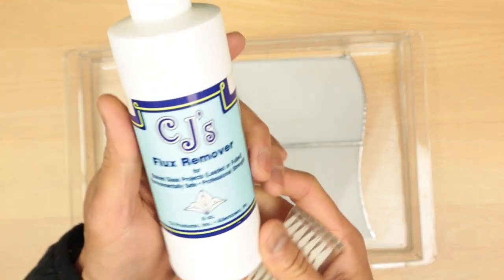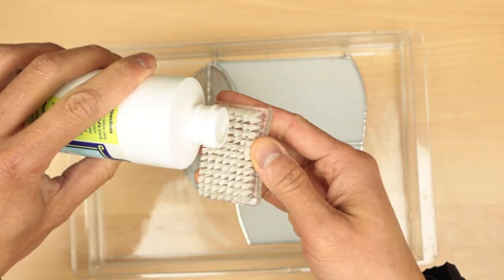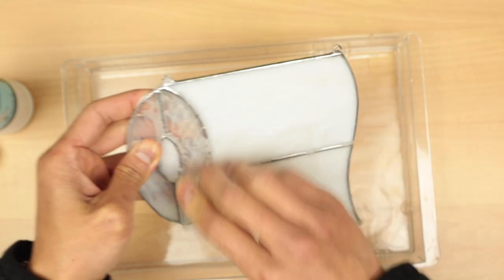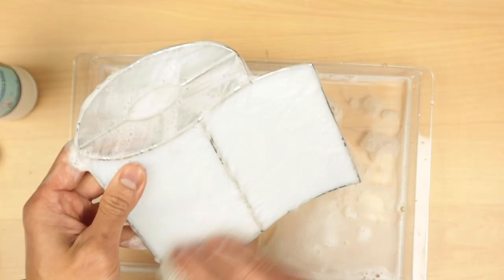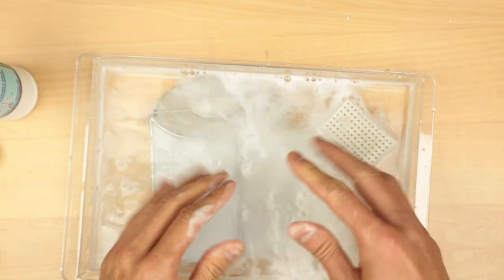So cleaning is pretty easy. We're going to use CJ's flux remover, so just a little bit of it with some water. And I might add it's also environmentally safe, so very nice product. Let's go rinse this off.